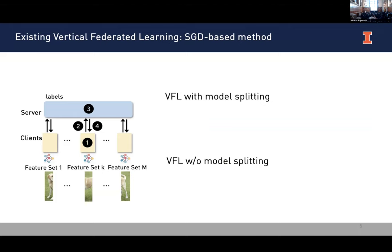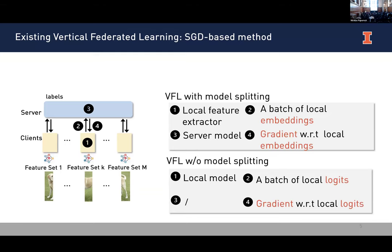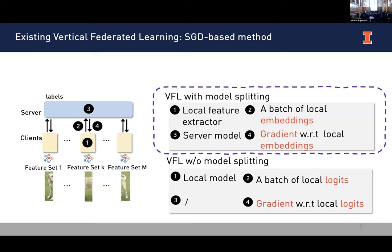Depending on whether the server has a model or not, VFL has two popular setups: with model splitting and without model splitting. In the with-model-splitting setting, the client has a local feature extractor and the server has the rest of the model, such as several MLP layers. In the without-model-splitting setting, the client has the whole local model and the server has no trainable parameters. In the with-model-splitting setting, the client sends a batch of embeddings to the server, which sends back gradients with regard to the local embeddings. We focus on the model-splitting setting in this talk.